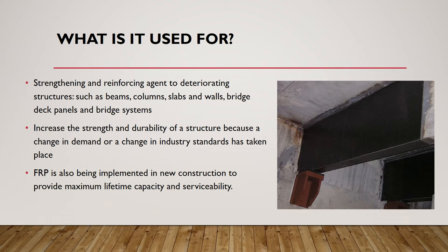Fibre reinforced polymer has been widely used for several decades in civil engineering applications to strengthen and restore existing structures. In the areas of civil engineering, FRP is most commonly used as a strengthening and reinforcing agent to deteriorating structures such as beams, columns, slabs, walls, bridge deck panels, and bridge systems. The deterioration of structures can be a result of age, misuse of facilities, lack of repair when an issue did arise, as well as a lack of maintenance. The other common use in civil engineering is to increase the strength and durability of a structure because a change in demand such as loading capacity and frequency has occurred, or a change in industry standards and rules has taken place.